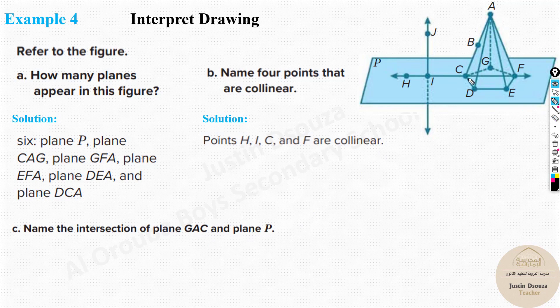And name the intersection of plane G, A, C. Where is G, A, C is over here. G, A, C. This is the plane. Let me just highlight it. G, A, and C. See, this is the plane. Where does it intersect the plane P? It intersects at this line CG, right? So plane and another plane intersects at a line, at line CG, or GC. It's the same thing.